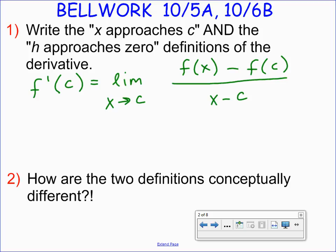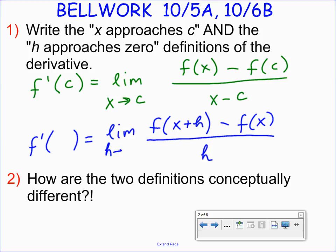The limit of f prime of c equals the limit as x approaches c of f of x minus f of c over x minus c. Awesome. Raise your hand if you have the same x approaches c definition that Jake had. Now share with the class my limit as h approaches zero definition. Allie? F prime of x equals the limit as h approaches zero of f of x plus h minus f of x over h. Awesome Allie. Raise your hand if you have the same f prime of x as Allie.